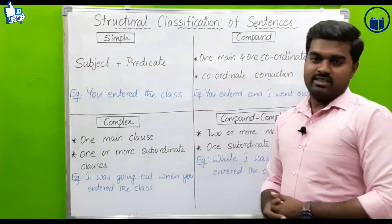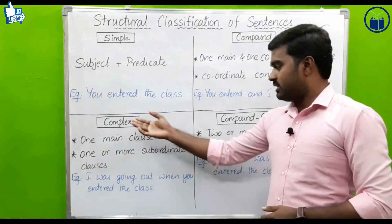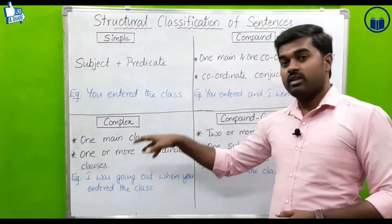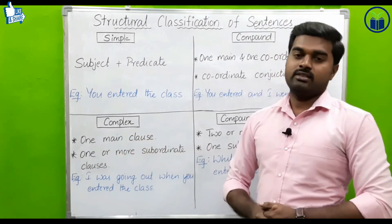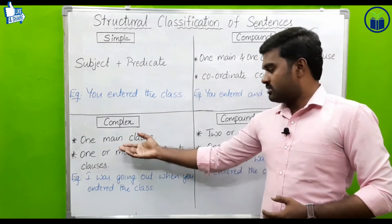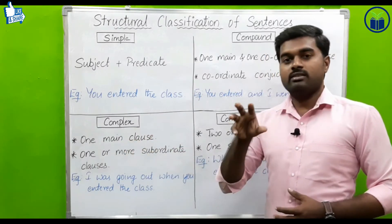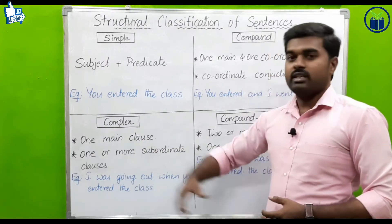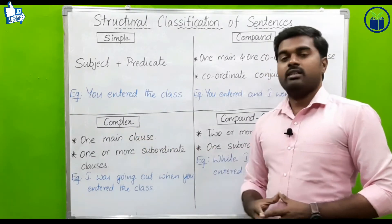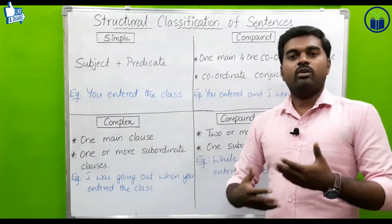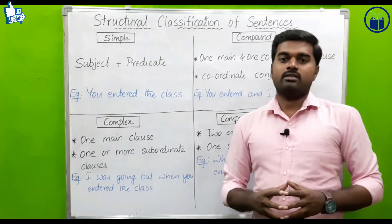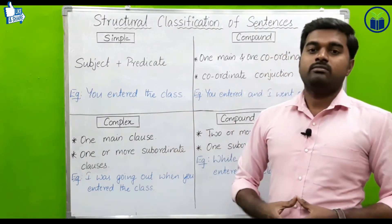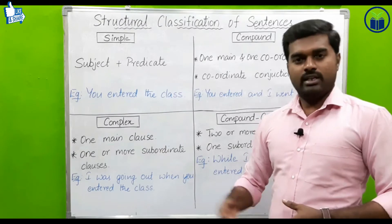Now let us see complex sentence. A complex sentence consists of one main clause and one or more subordinate clauses. The main clause is the independent clause — it has a complete meaning on its own. The subordinate clause provides additional, dependent information.